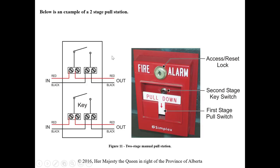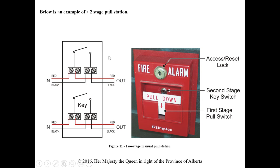There's also a two-stage pull station, which relates to the difference between single-stage and two-stage systems. It has a second key — sometimes behind the panel you pull down. Pulling the station initiates a first-stage alert signal; then you have a maximum of five minutes to get there, determine if there's an actual fire, acknowledge it with the key for the second-stage portion, or initiate a full alarm sequence if a fire is confirmed.